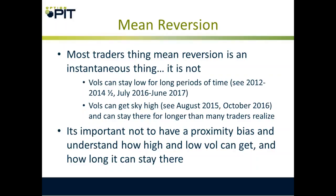Most traders think mean reversion is an instantaneous thing — it is not. Vols can stay low for very long periods of time. See July 2012 to 2014, and July 2016 to where we are now. But vols can also get sky high. Look at what happened starting in August 2015 through January 2016, and again October 2016 — it can stay up for a while. It's important not to have recency or proximity bias when understanding how high and low volatility can get. The assumption that every spike will just get sold is a bad assumption.